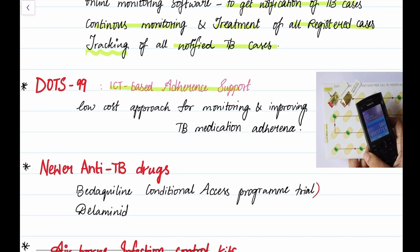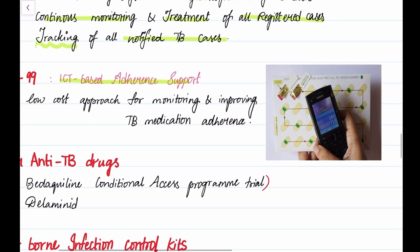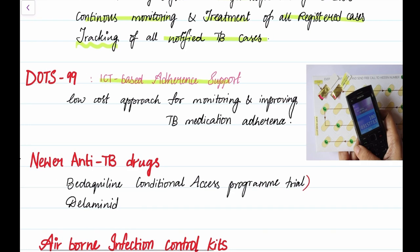Then we have DOTS-99, which is again an ICT-based adherence support. This is so cool where the patient has to give a missed call to a number after taking the treatment. Here's a picture showing the number where the patient is giving a missed call. It's a low-cost approach for monitoring and improving TB adherence.